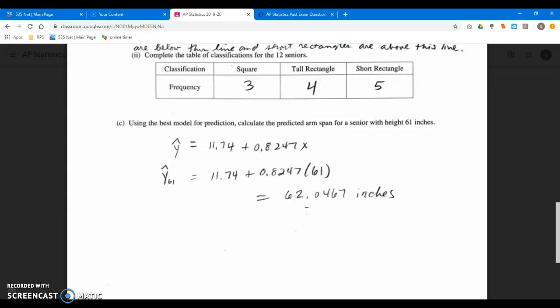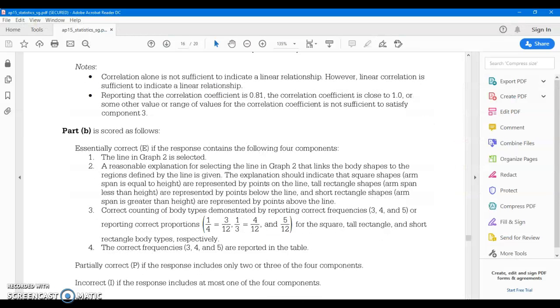So we just have to substitute in 61 to make the predicted value. So I had like 62.05 or wherever you want to round that off here. Alright, so grading rubric wise, part B: graph two is selected. I got that right. A reasonable explanation for selecting the line in graph two that links the body shapes to the regions defined by the line is given. The explanation should indicate that square shapes are represented by points on the line, tall rectangles are below the line, and short rectangles are above the line. I aced that one, right?